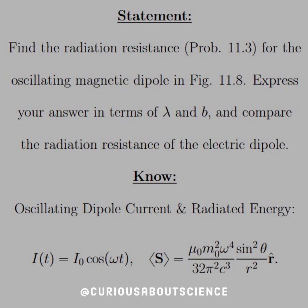The statement is, find the radiation resistance from 11.3 for the oscillating magnetic dipole in the figure 11.8. Express your answer in terms of lambda and b and compare the radiation resistance of the electric dipole.